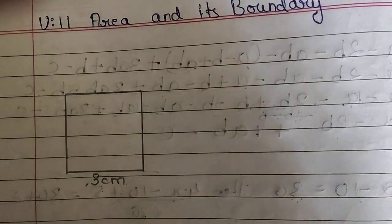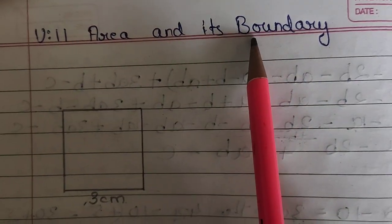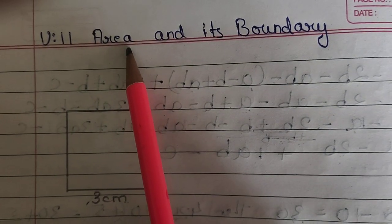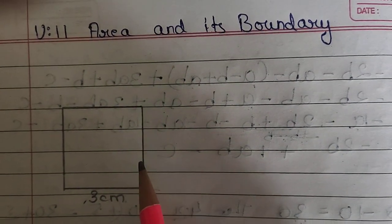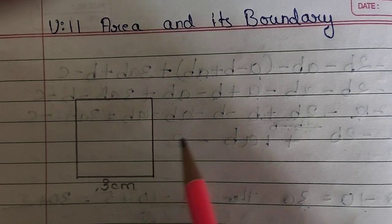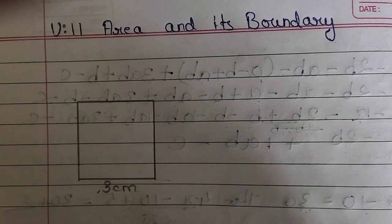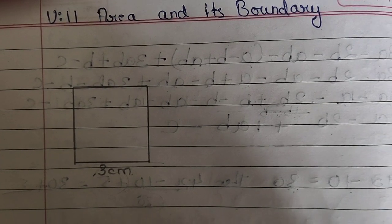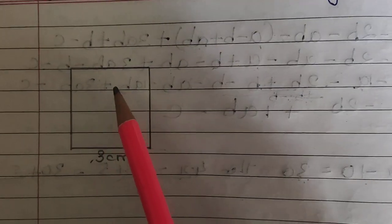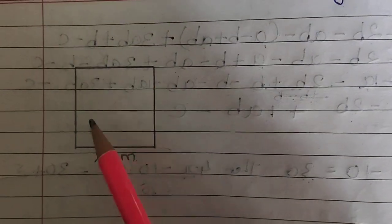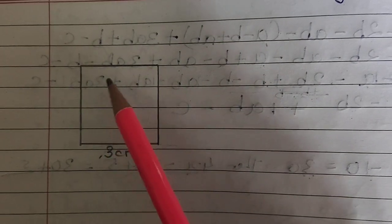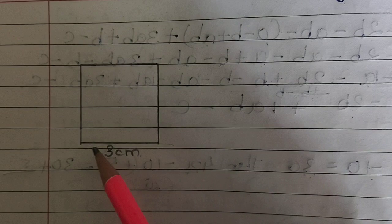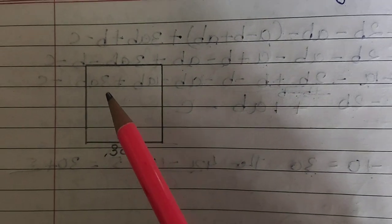Now first of all we will learn about area. What do you mean by area? The area is the space occupied by a flat shape or surface of an object — that is called the area. In simple language, this is a square and how much space this square shape has occupied on this surface — that place occupied is called the area.